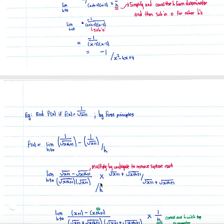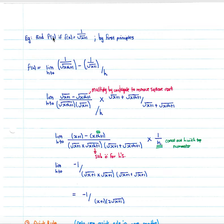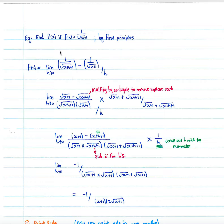Here is a more complicated example of finding a derivative by first principles: find f'(x) if f(x) = 1/√(x+1). Using our formula, f'(x) equals the limit as h tends to zero of 1/√(x+h+1) minus 1/√(x+1), all over h. For the first part of the formula, you simply put x+h where you see x, and for the second part it is simply your function, all divided by h.